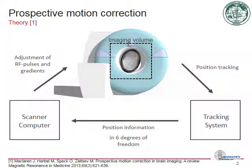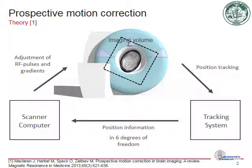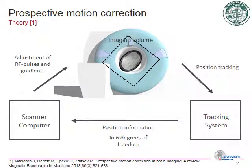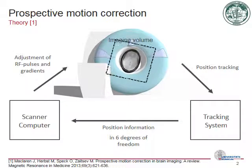where all gradients and RF pulses are adjusted in real time. This is equivalent to moving the imaging volume with the subject so that there is no relative motion between them, and the resulting images show no motion artifacts.